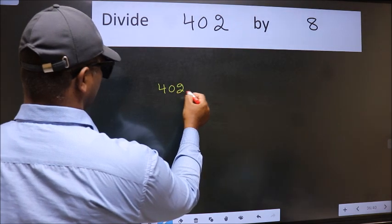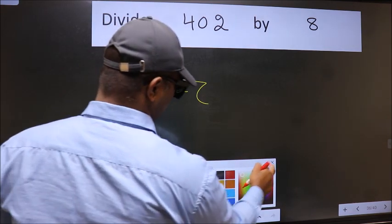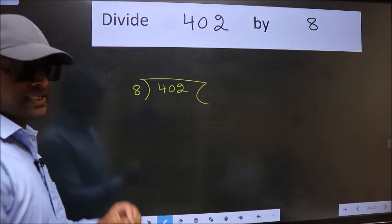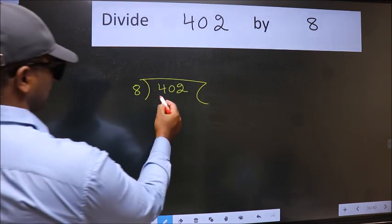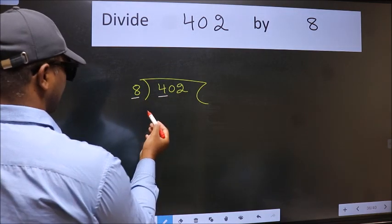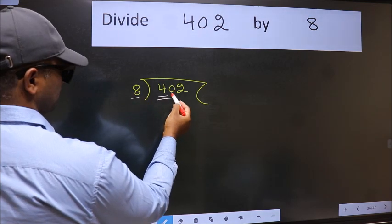402 and 8 here. This is your step 1. Next, here we have 4 and here 8. 4 is smaller than 8. So, take two numbers 40.